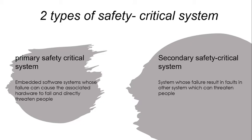The second type is the Secondary Safety Critical System. This is a system whose failure results in faults in other systems, which can then threaten people. Examples include medicines and vitamins in drug administration — for instance, in factories where incorrect drugs or doses are placed. That is a common example of secondary safety critical systems.